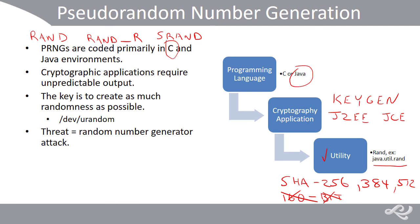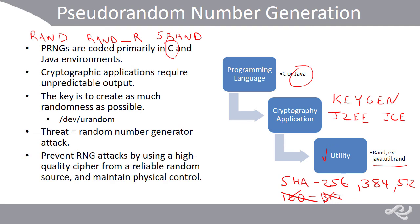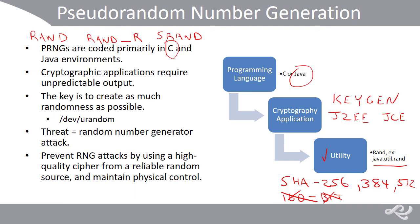If the random number generation, or RNG, process is not of high quality, that can lead to vulnerabilities and possibly compromise of the entire cryptographic system. This might be done via a cryptanalysis attack or an input-based attack. Preventing RNG attacks can be done by implementing the randomness methods mentioned previously. We'd use a high-quality block cipher such as AES, or a stream cipher such as RC4 or a more secure derivative, derived from a good random source. Then we would document and audit the RNG process, which could be considered more of a detective or corrective control as opposed to a preventive control.